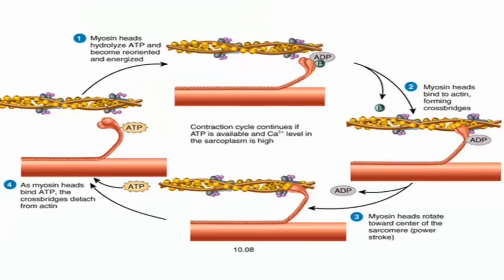One of the things necessary for muscle contraction is energy, and we store energy in molecules of ATP — adenosine triphosphate. So the first thing that has to happen is that the myosin must be in a position to reach out and grab the actin at the binding sites.